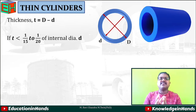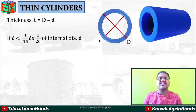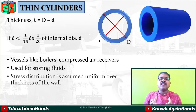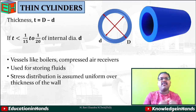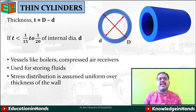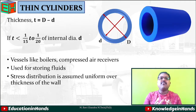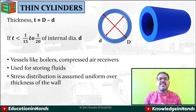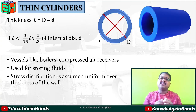Our prime concern here is thin cylinders. Where we use these thin cylinders in practical applications: vessels like boilers or compressed air receivers, like the gas cylinders available in our homes. These are generally used for storing fluids like liquids or gases. The stress distribution is assumed uniform over the thickness of the wall. Whatever closed container or thin cylinder we consider, the pressure exerted by the fluid is distributed equally on the internal surface. This is the basic introduction of the thin cylinder.